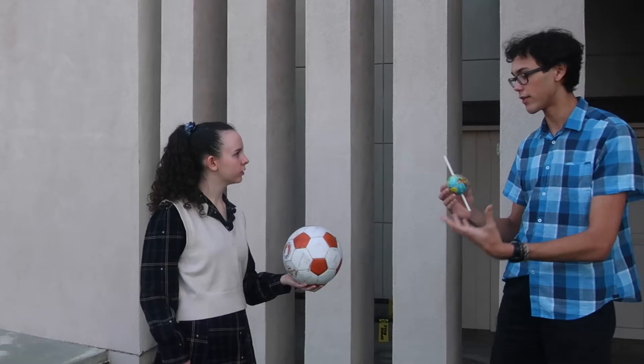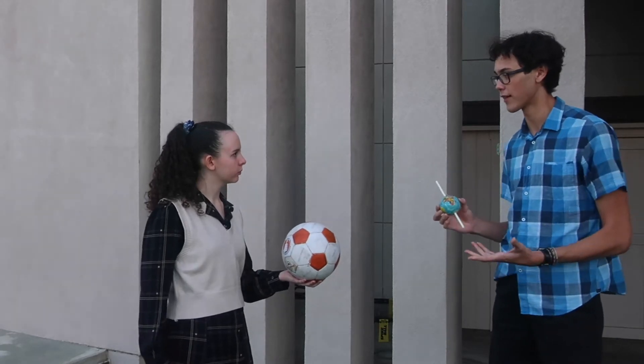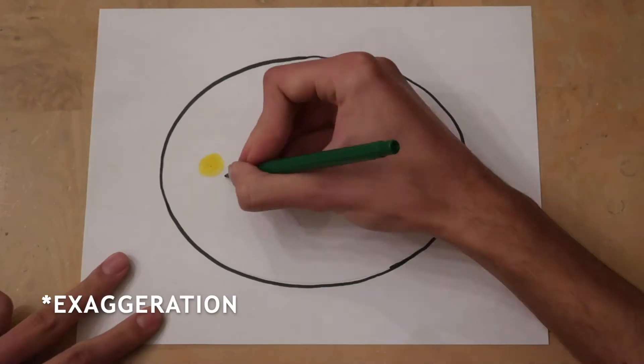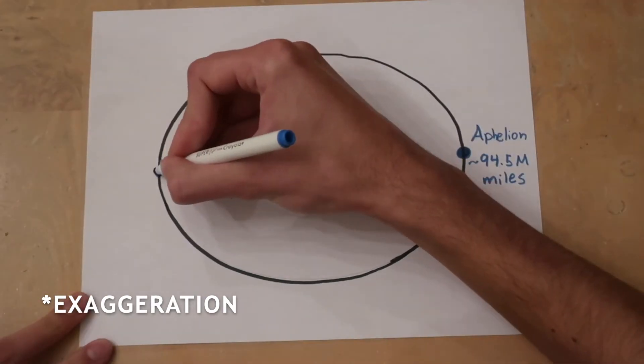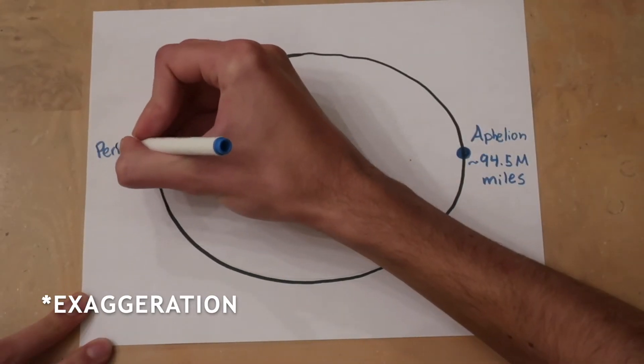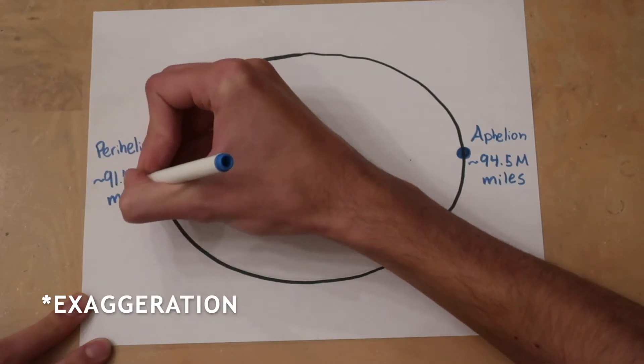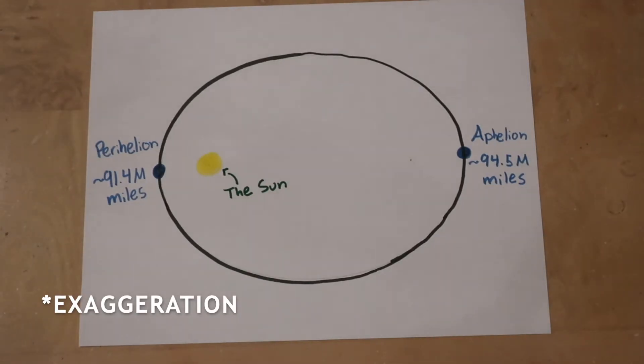So the seasons are controlled by how much and what part of the Earth is facing the sun, not by the distance of the Earth to the sun. The distance from the sun really plays no effect on the seasons. But the distance from the Earth to the sun does vary over time. All planets orbit in ellipses and the Earth does too. At its closest point, called the perihelion, the Earth is about 91.4 million miles away from the sun. And at its furthest point, the aphelion, the Earth is about 94.5 million miles away.